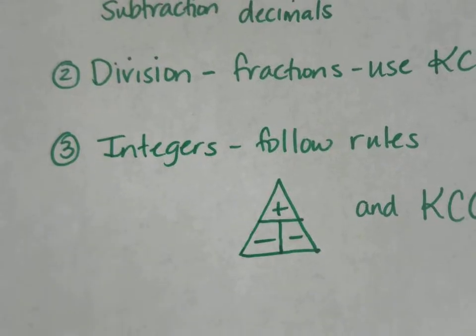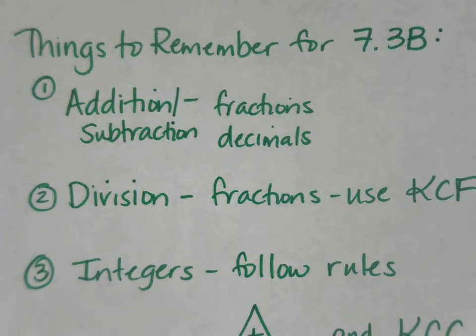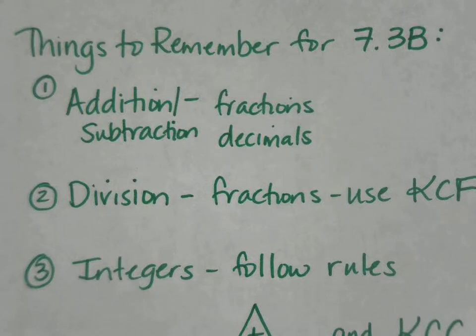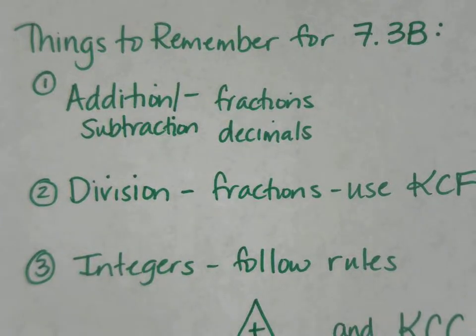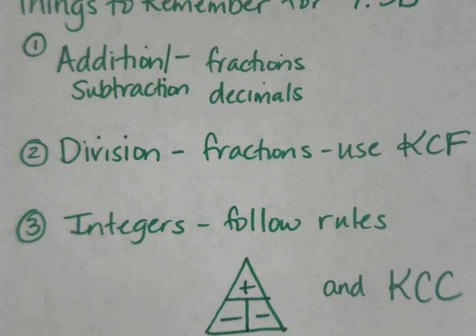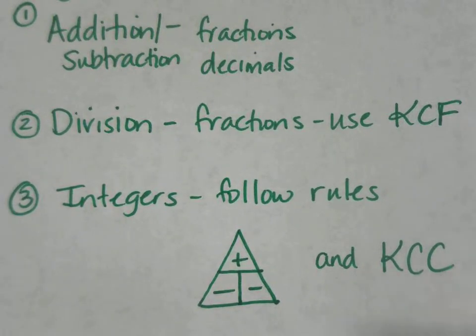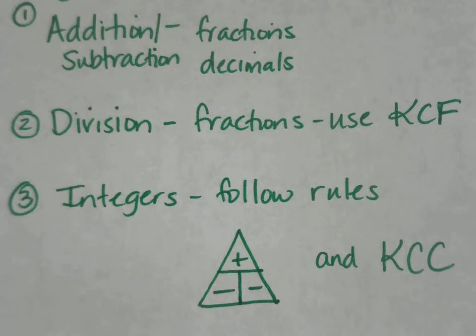Things you need to remember for 7.3B: If you're adding or subtracting fractions, you need a common denominator. If you're adding or subtracting decimals, line up the decimals. When multiplying, lining up decimals is not important - you just count the number of decimal places at the end. For division with fractions, remember to use KCF - Keep Change Flip. Keep the first fraction the same, change the sign to multiplication, and flip the second fraction to its reciprocal.